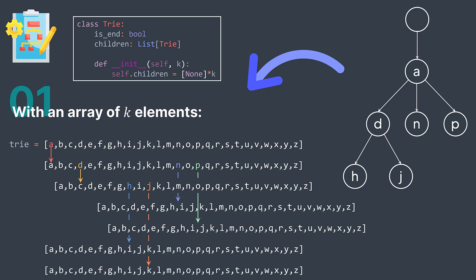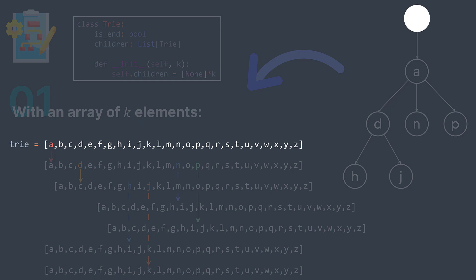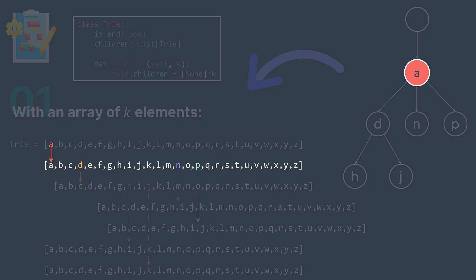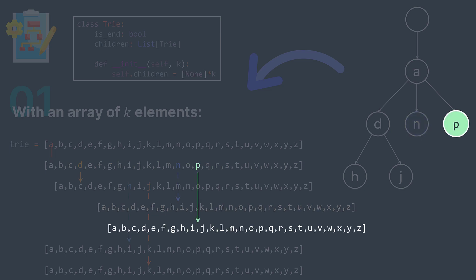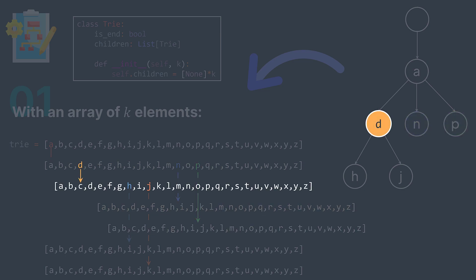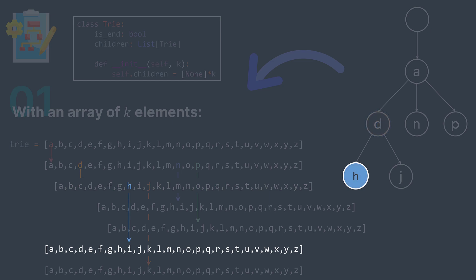For example, the first array represents the root — it has only one child, the letter A. Then A has three children: D, N, and P. Each one points to a node. N has no children, P has no children, and D has two children, H and G, each pointing to a node.